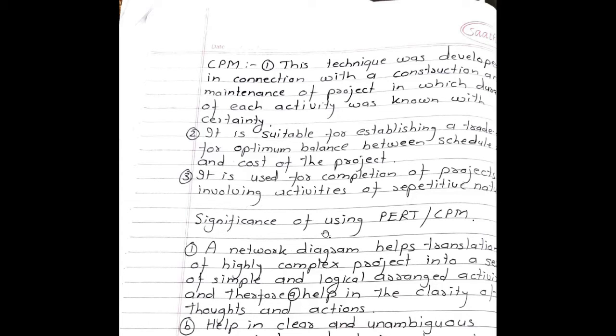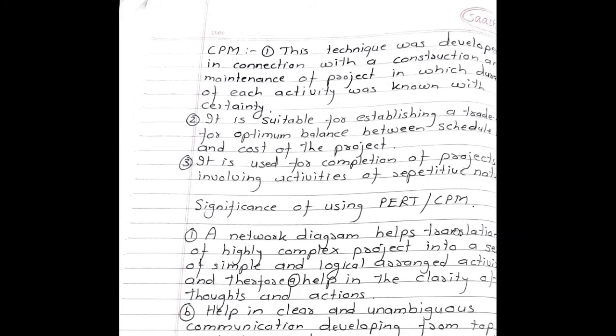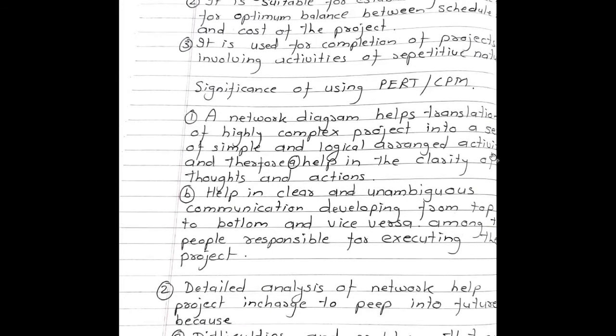Significance of using PERT and CPM. First point: A network diagram helps translation of highly complex projects into a set of simple and logically arranged activities and therefore help in the clarity of thoughts and actions. B part: helps in clear and unambiguous communication developing from top to bottom and vice versa among the people responsible for executing the project.